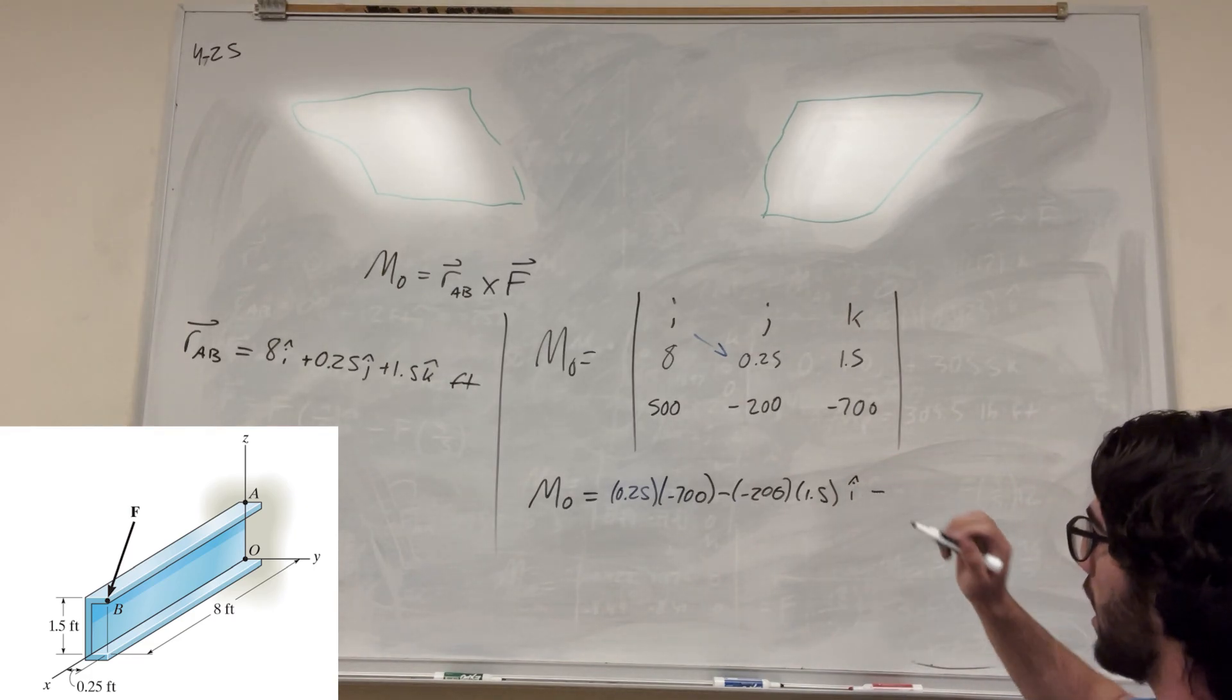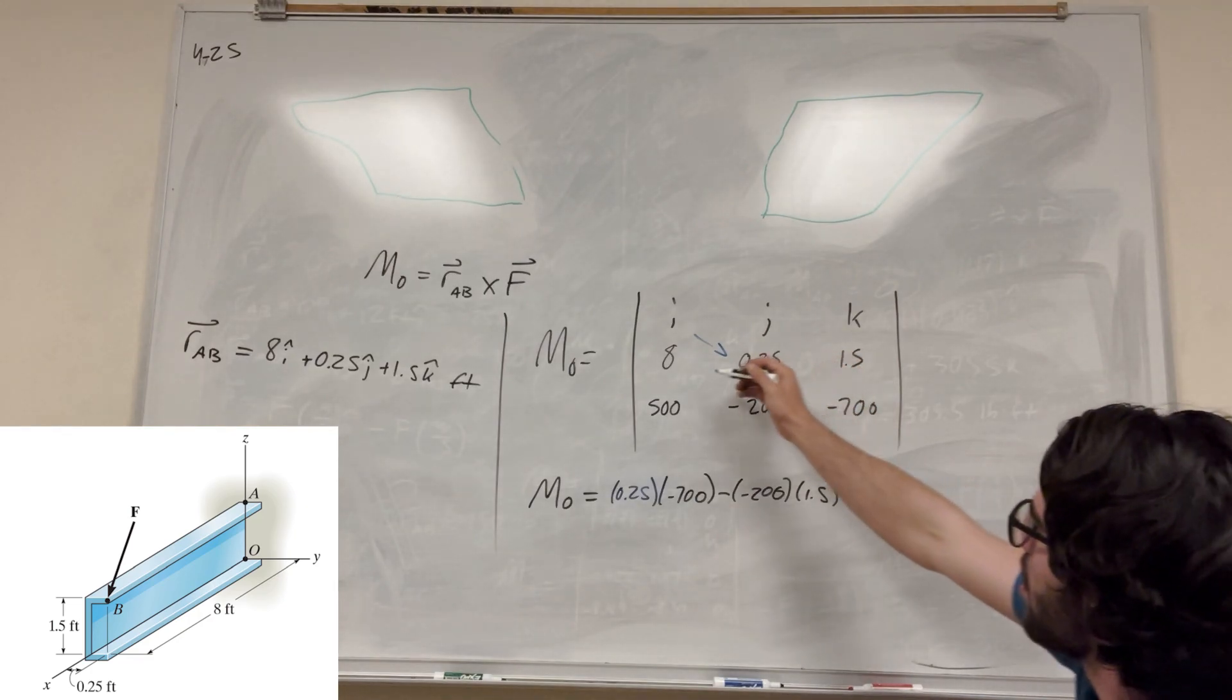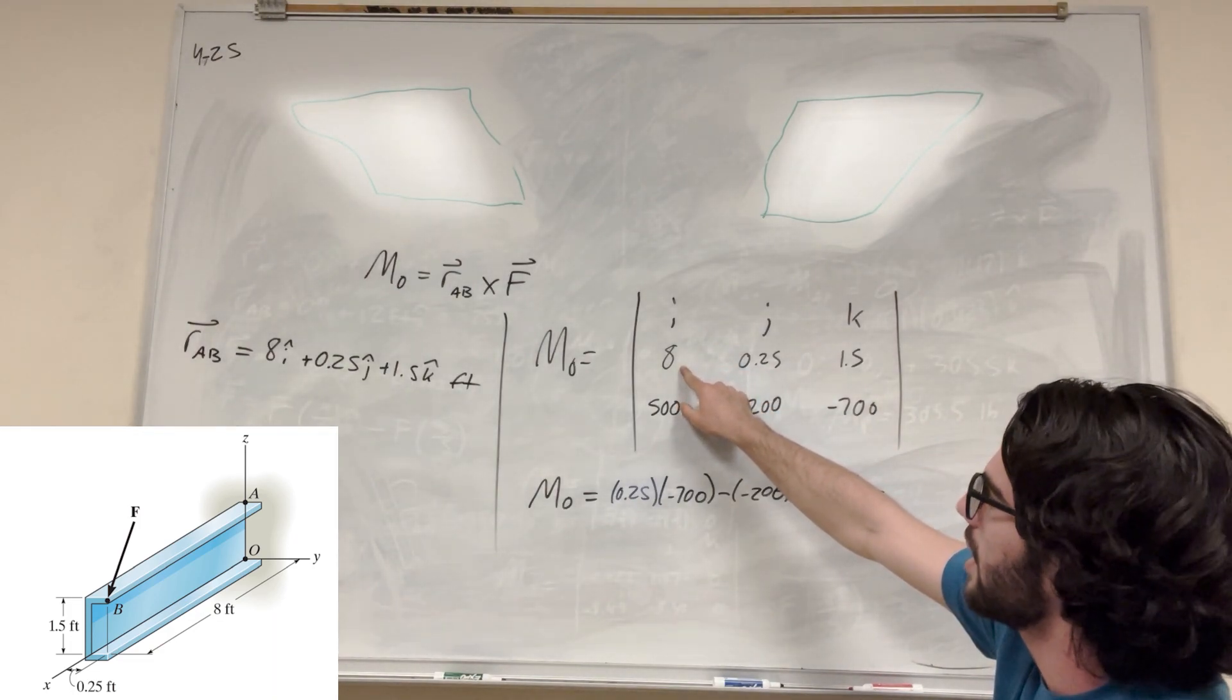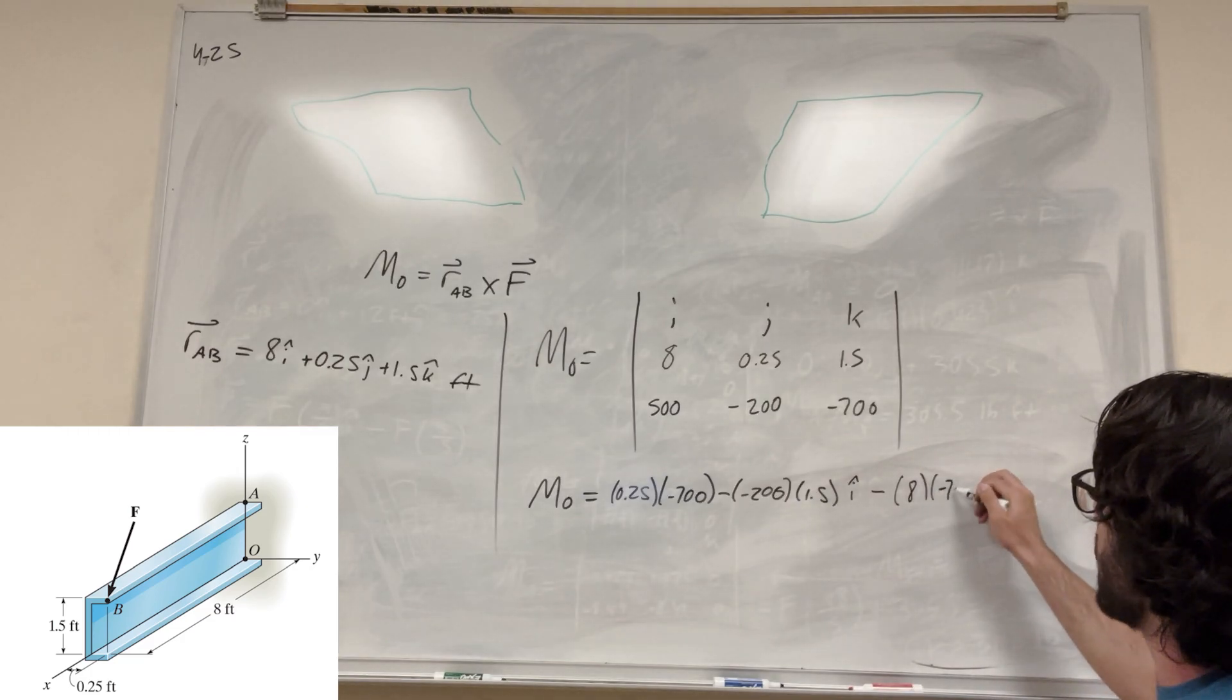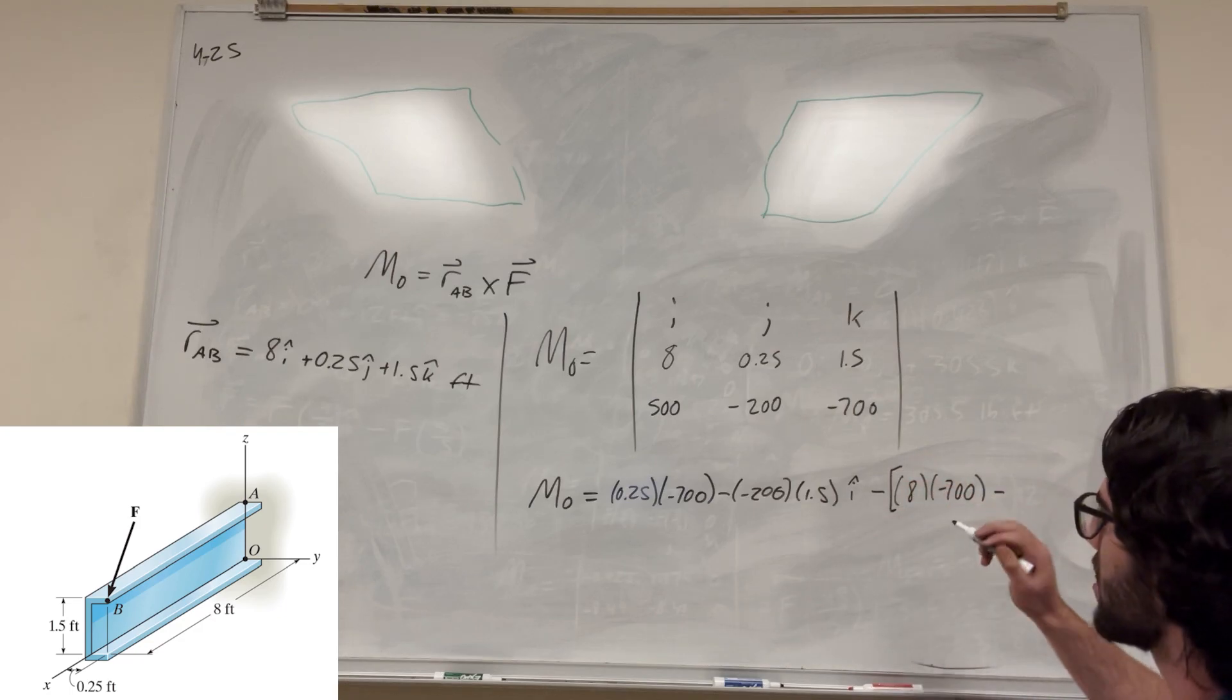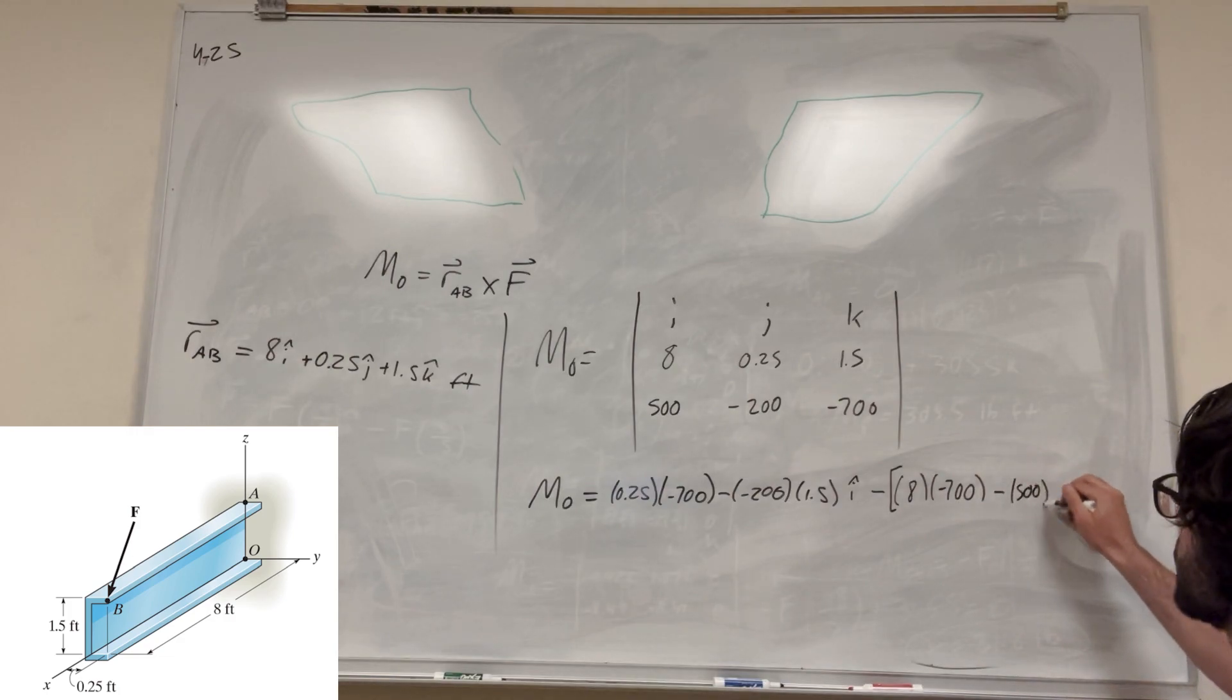So then you're going to have to subtract j. Don't forget this negative sign, it becomes very important. So then we're going to start all the way over here. Once again, we're going to take the top left of the space we're working in and multiply it by this. So it's going to become 8, negative 700, minus, and this negative is distributive, so we have to keep that all in big parentheses, 500 times 1.5, j.